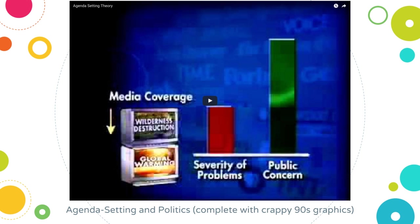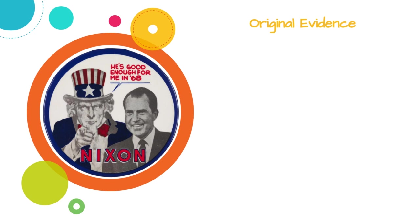Justin Lewis has a really good video and explanation on agenda setting function and politics, particularly United States politics. Pay close attention to the two-minute-45 mark where Justin talks about how public perception of the severity of global warming and the severity of the drug problem in America corresponded exactly to how the media covered those issues. The link will be included in the comments below.